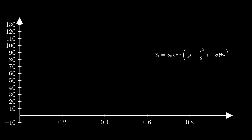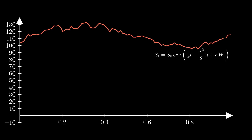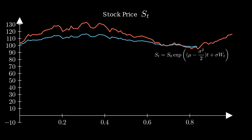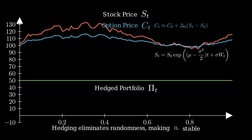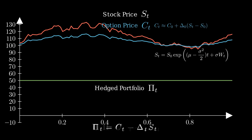Let's see Itô's lemma in action. This red line is a stock price, jiggling randomly due to a Wiener process. The blue line is an option price tied to that stock, also volatile because it depends on s. But by holding just the right amount of stock, we hedged the option, creating a stable portfolio shown in green. The right amount of stock is the first-order term from Itô's lemma equation, also known as delta. This is the magic of Black-Scholes: using Itô's lemma, we turn uncertainty into a predictable return.